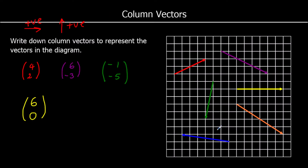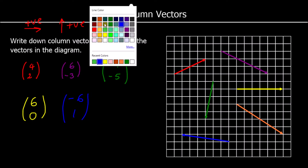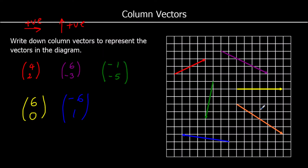For the blue vector here, we are going to the left 6. So that's negative 6, to the left 6, and then up 1. So negative 6, 1. And finally, the orange vector goes to the right 6, and then down 4. So it's 6, negative 4.